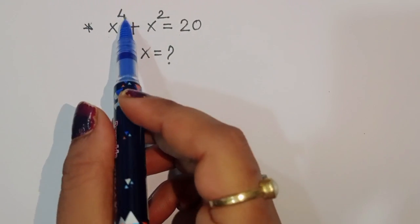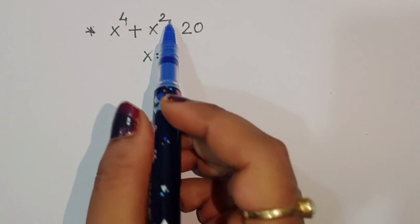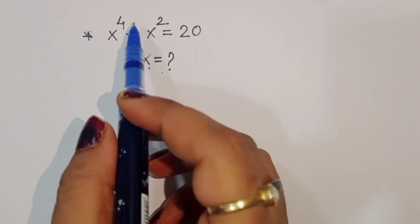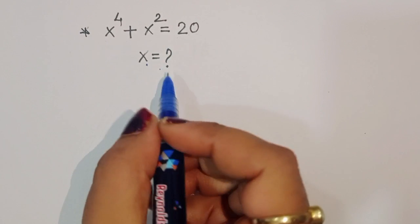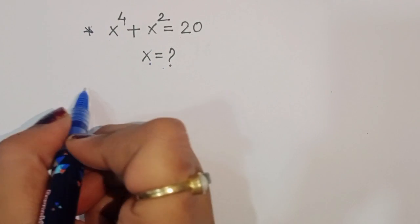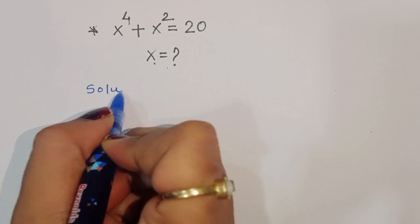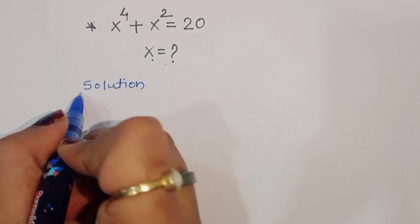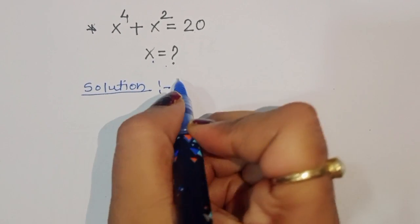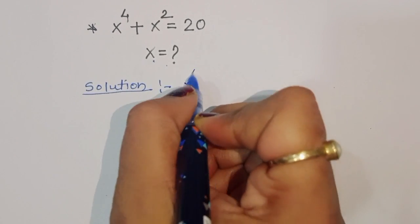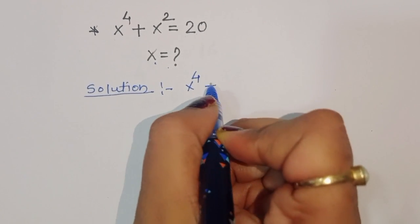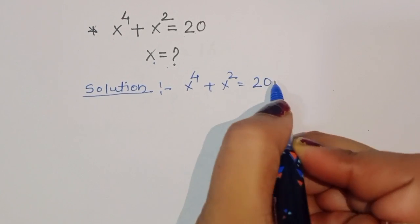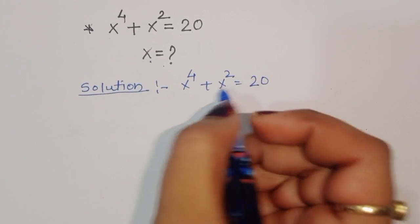The question is: given x⁴ + x² = 20, we have to find the value of x. Let's see the solution. What is given is x⁴ + x² = 20.